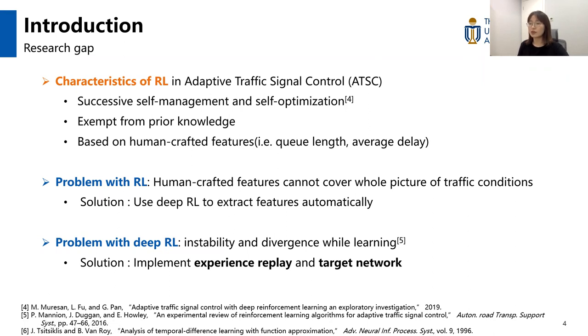To deal with that, we could use deep reinforcement learning to extract features automatically. However, there are still some problems with deep RL because it often induces instability and divergence while learning. One solution to overcome those shortcomings is to implement experience replay and the target network.